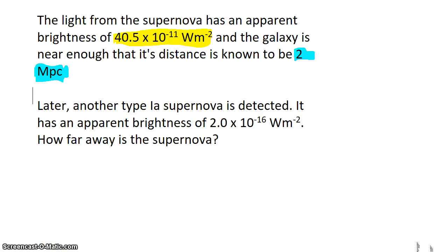Later, another type 1a supernova is detected. It has an apparent brightness of 2.0 × 10^-16 watts per square meter. We want to determine how far away this supernova is.